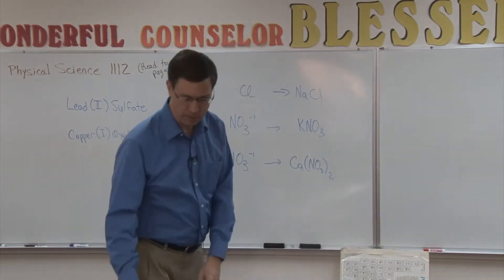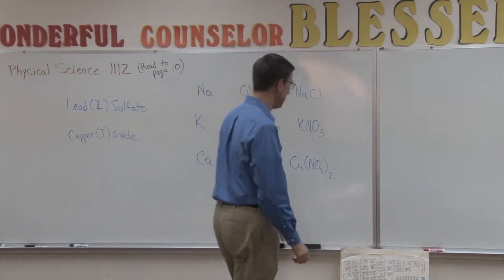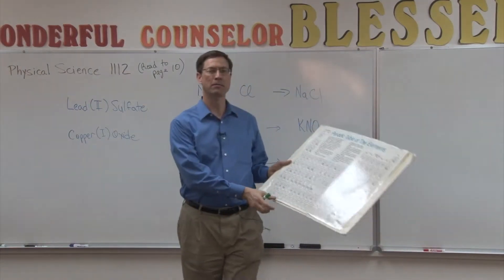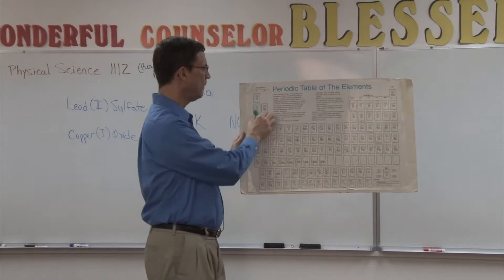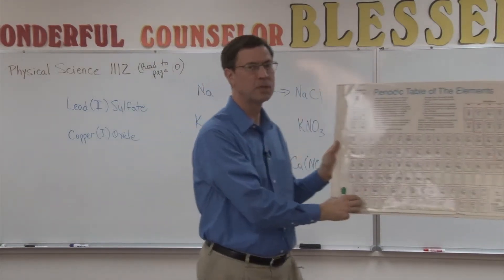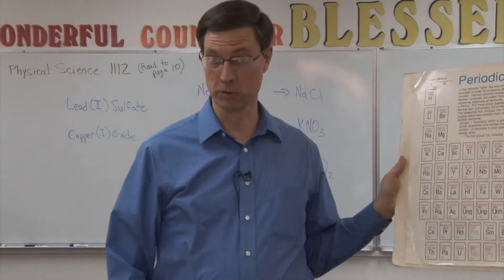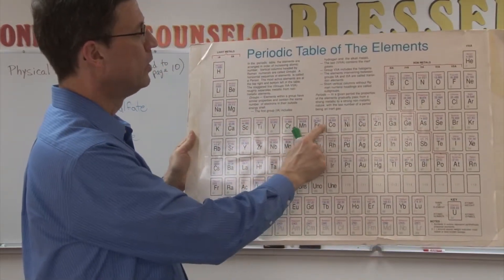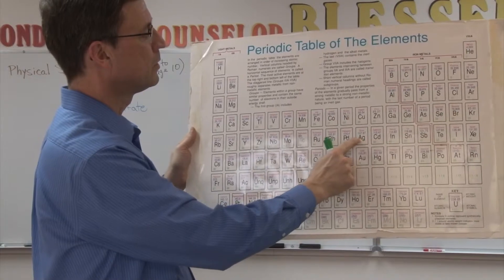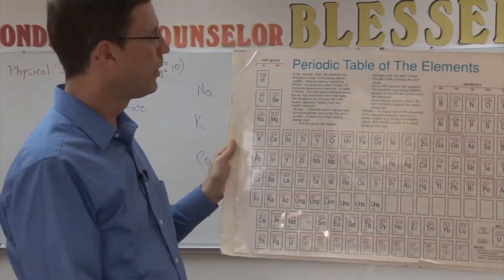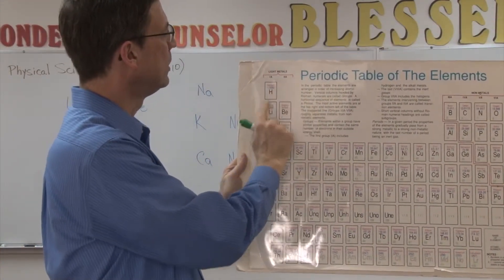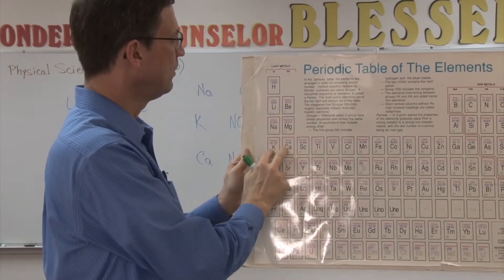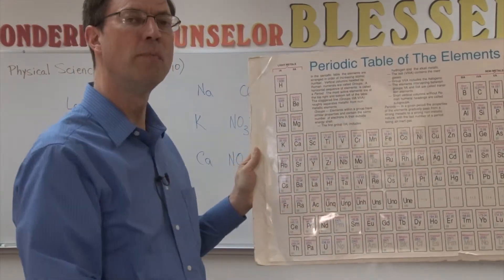First off, let's talk about the fact that atoms that are on the left-hand side of the chart, these first two columns are considered metals. Now when you think of metals, you might think of iron, nickel, copper, zinc, silver, gold. But all of these over here, other than hydrogen, lithium, beryllium, magnesium, sodium, potassium, those are all metals.